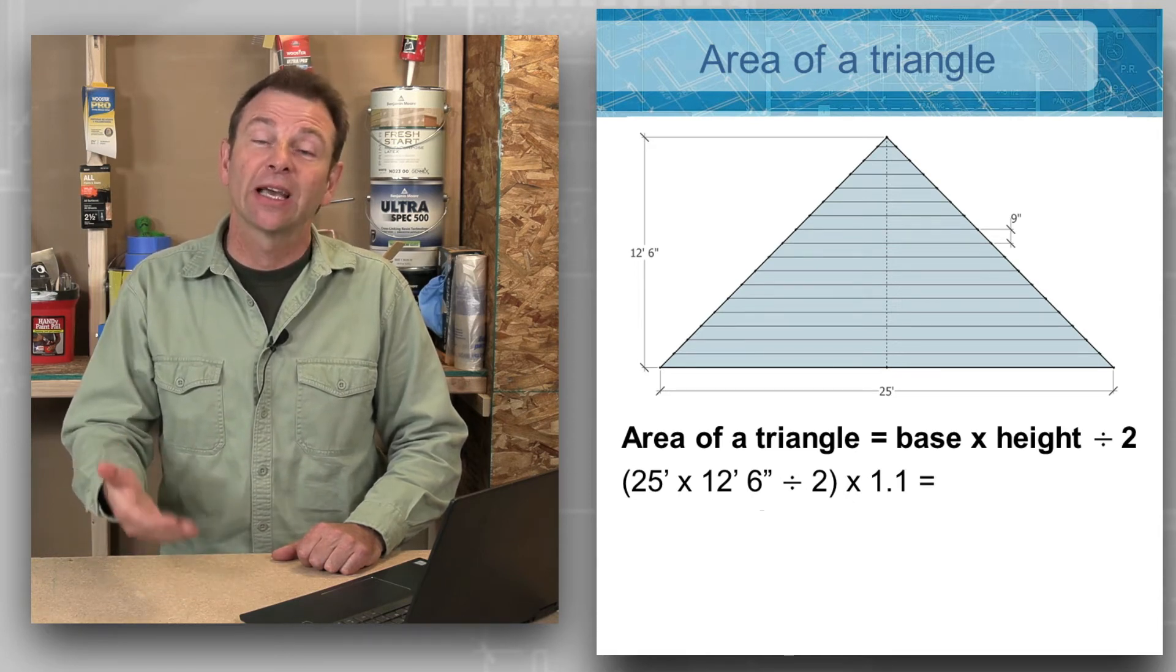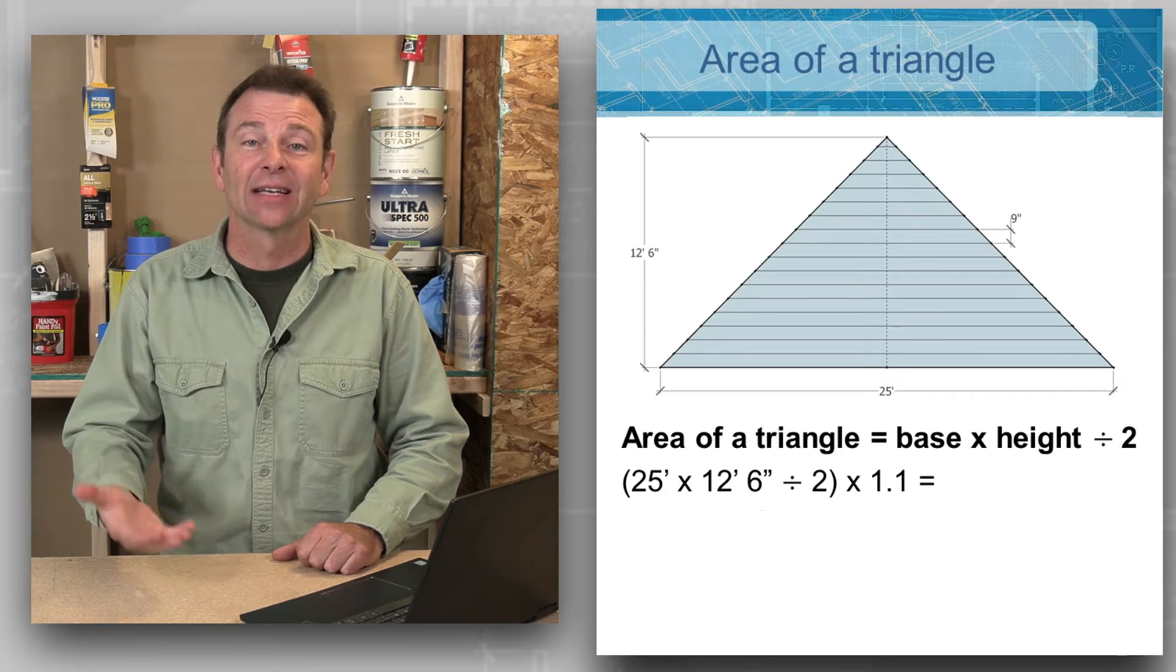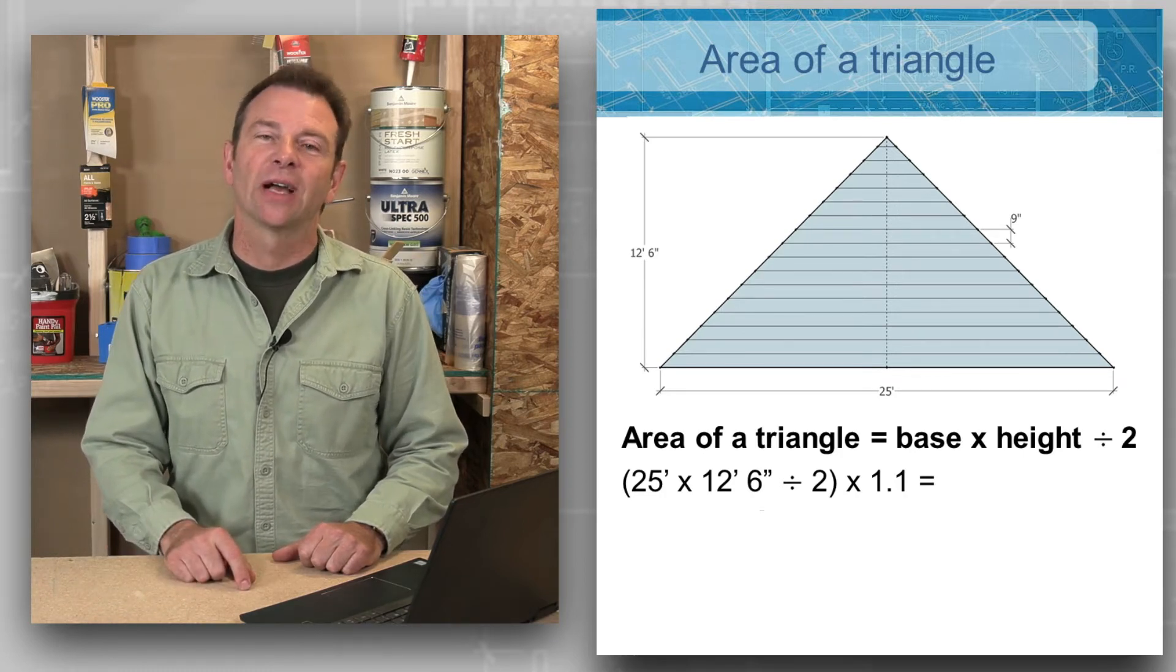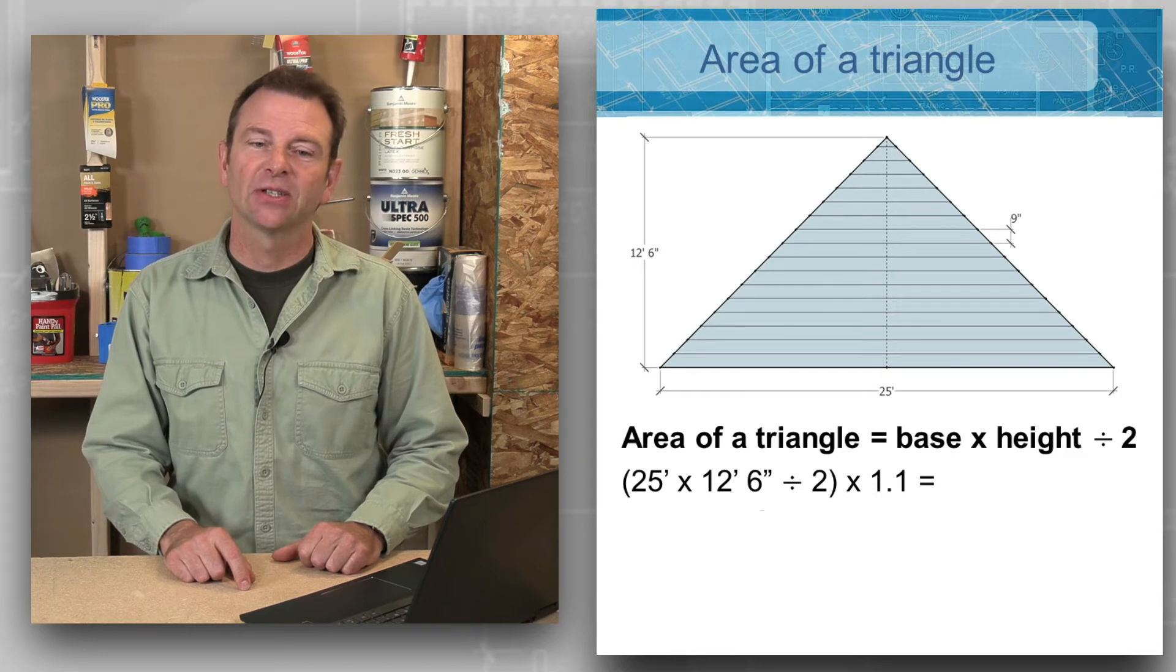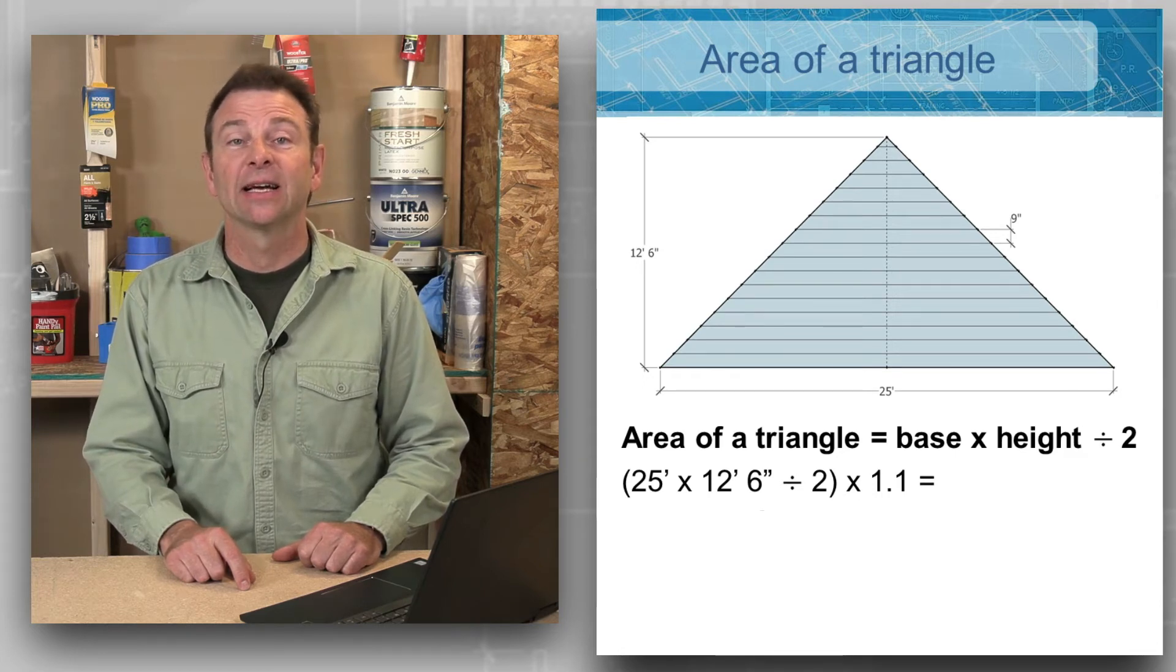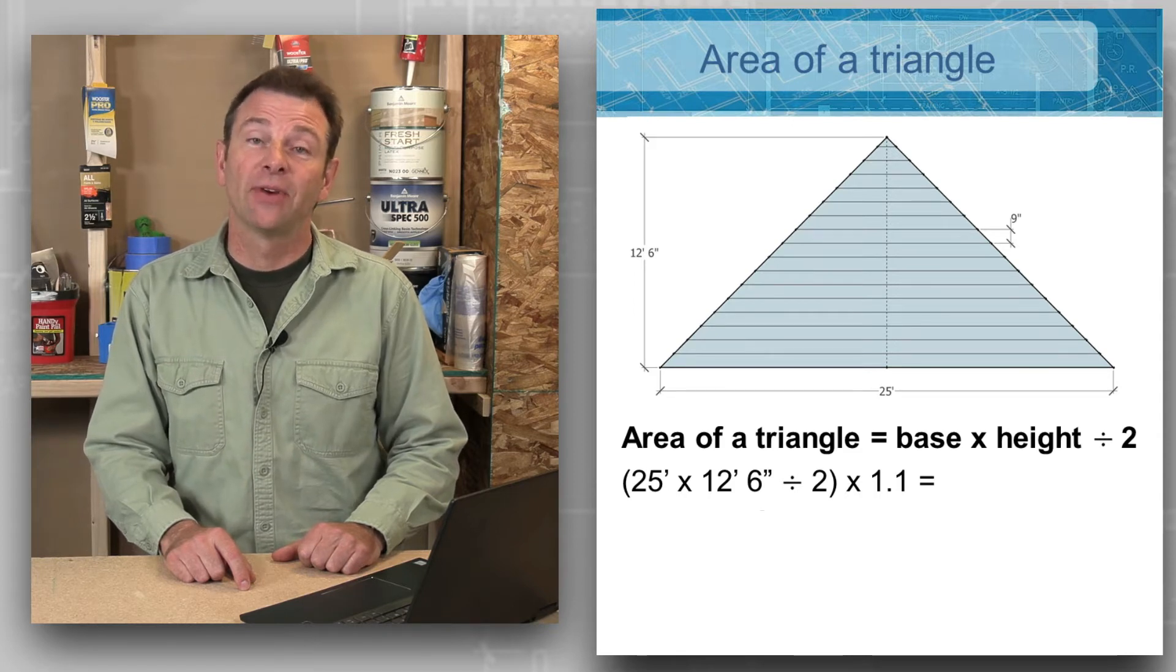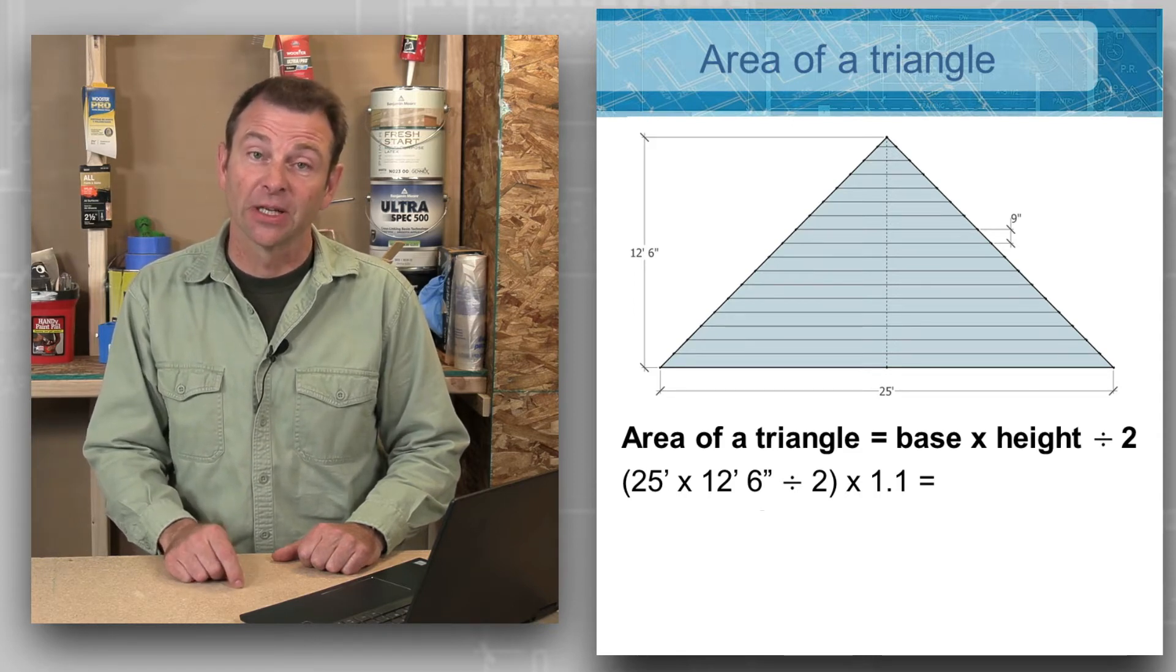Let's plug in our numbers. We've got 25 feet, that's the base of this triangle. We're going to multiply that times 12 feet six inches, which is the height of our triangle. We're going to divide it by two because that's what our formula needs to solve for area, and then we're going to multiply that answer by 1.1, which gives us our extra 10 percent for our lap on our siding.